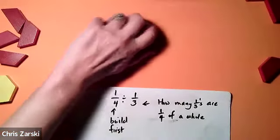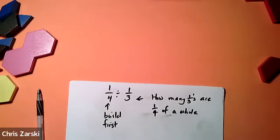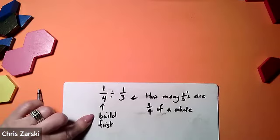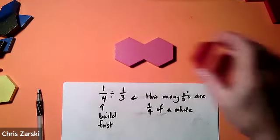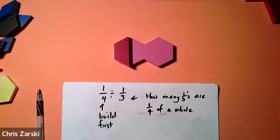Let's try one quarter divided by one third. So let's build the quarter first. So here's our whole. We know that that is equal to one quarter. And now it says divided by a third. In other words, how many thirds are there in one quarter?